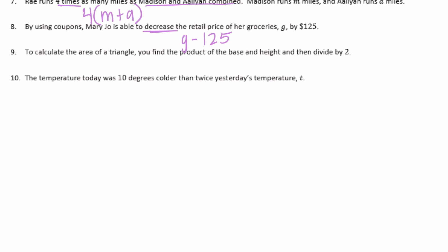Number nine: To calculate the area of a triangle, you find the product of the base and height, then divide by two. Product means base times height, then divide by two: (base × height) ÷ 2, or base times height over 2.